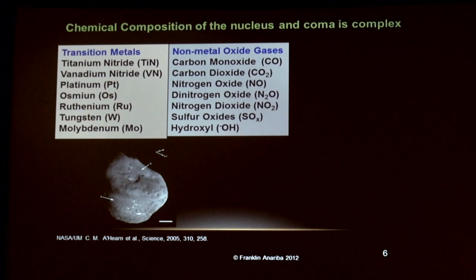Another transition that has been found in the nucleus of comets are titanium, vanadium, in the form of nitrides, platinum, osmium, molybdenum, tungsten, and molybdenum, just to mention a few. So you can see it's very complex. The composition from an electrochemical standpoint is complex in comets. In the coma of comets, this is the several gases that have been identified, carbon monoxide, carbon dioxide, a series of oxides with nitrogen, sulfur oxides, hydroxyl, and I left out molecular oxygen and molecular nitrogen.